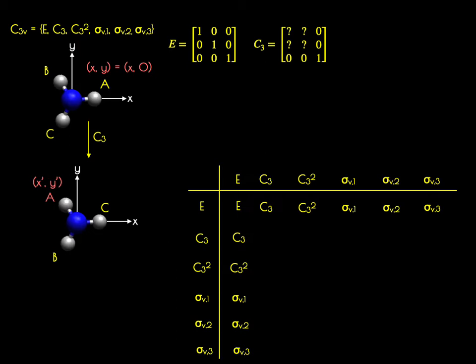We can use a bit of trigonometry to determine how a generic vector with XY components will transform upon rotation by some value theta. Here are equations that tell you how the X and Y positions will transform given a rotation by theta. Here theta is 2π over 3.